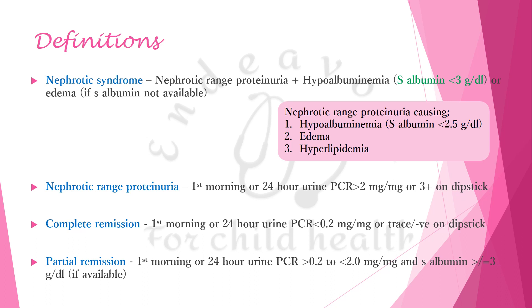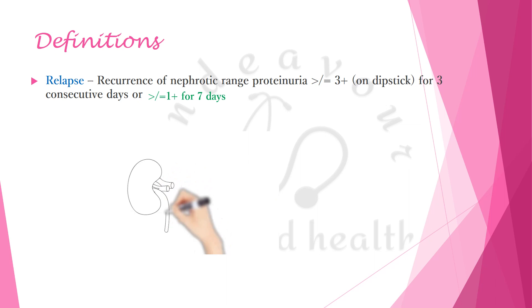Nephrotic range proteinuria continues to be defined by a urine protein-creatinine ratio of more than 2, as was previously. Remission has been defined as urine PCR less than 0.2, but two new terminologies have come up: complete remission where urine PCR is less than 0.2, and partial remission where urine PCR is between 0.2 and 2. Relapse is urine protein 3+ on dipstick for 3 consecutive days, but now one more criterion has been added: proteinuria of 1+ or more for 7 days.